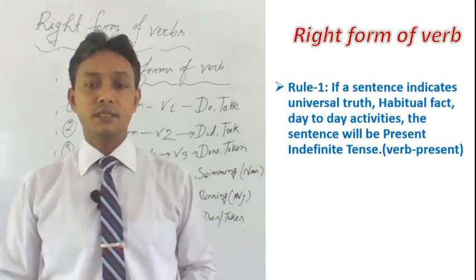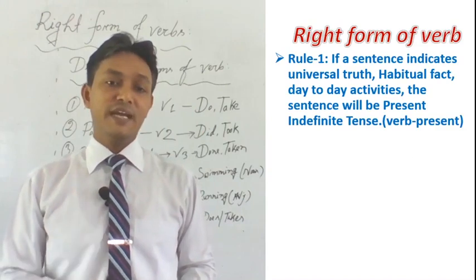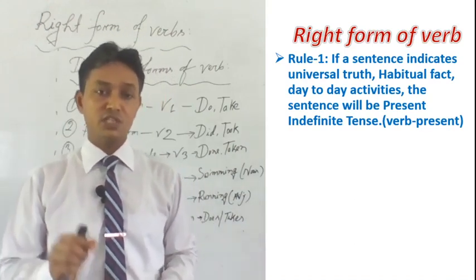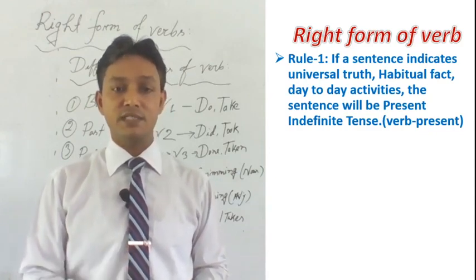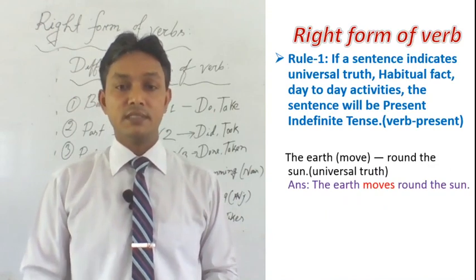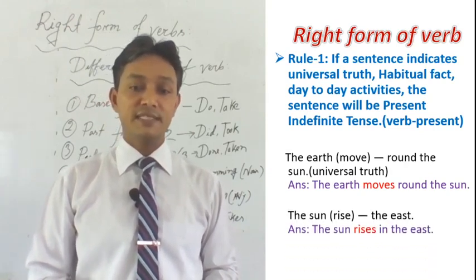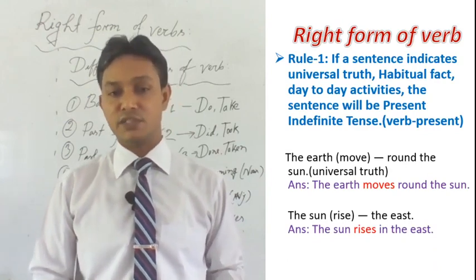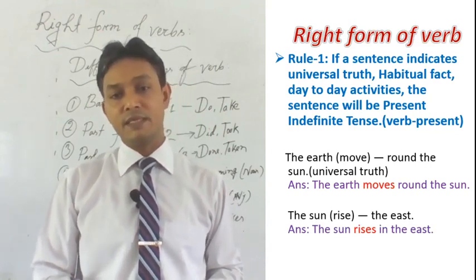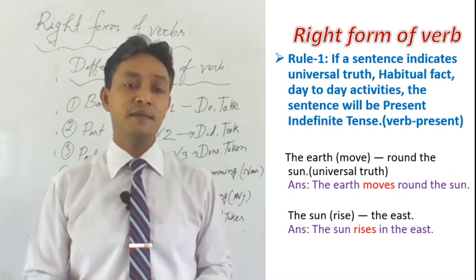Rule number one: if a sentence indicates universal truth, habitual fact, day-to-day activities, or if any general description is given, we write the sentence in present indefinite tense. The structure is: subject + V1 (base form) + object. Examples: 'The earth moves around the sun' — universal truth. 'The sun rises in the east' — universal truth. 'He goes to school every day' — habitual fact. 'Father gets up early in the morning' — also a habitual fact.